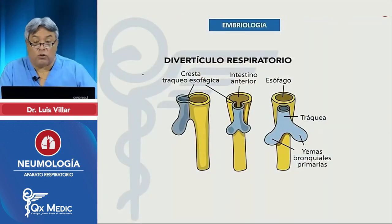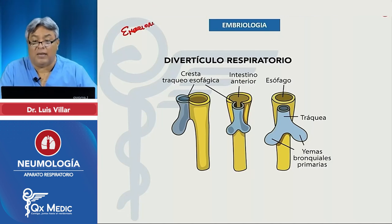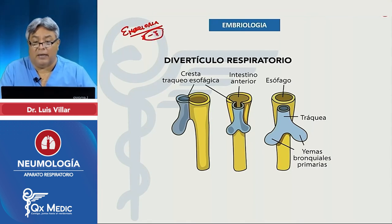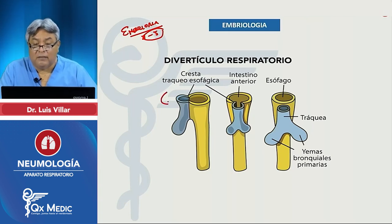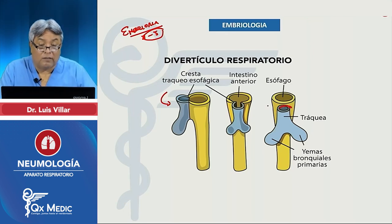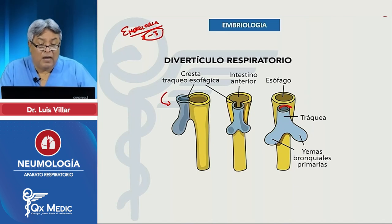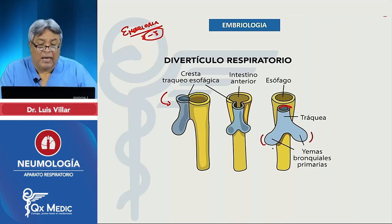Primero tenemos la formación del divertículo respiratorio, que corresponde a la fase embrionaria. Esta primera fase dura entre la tercera y la quinta semana. Entre la tercera y cuarta semana, alrededor del intestino anterior en la parte cefálica, se va a formar la cresta traqueoesofágica, que va a cerrarse y formar el tabique traqueoesofágico. Este tabique forma la tráquea y aparece alrededor de la cuarta a quinta semana junto con las yemas bronquiales primarias.